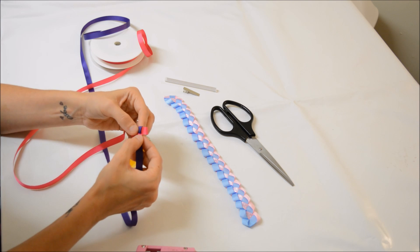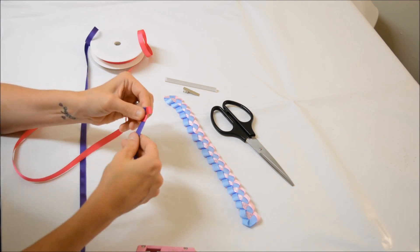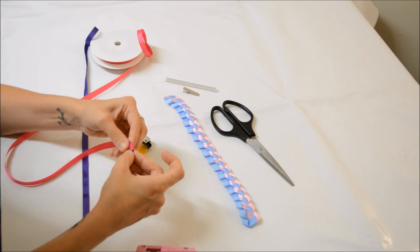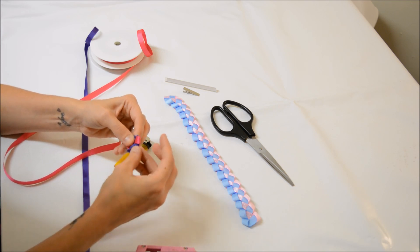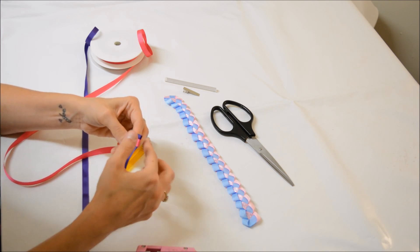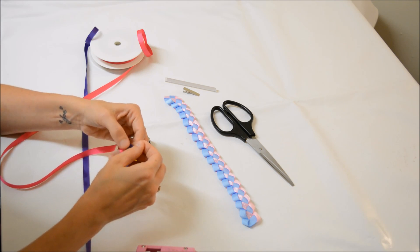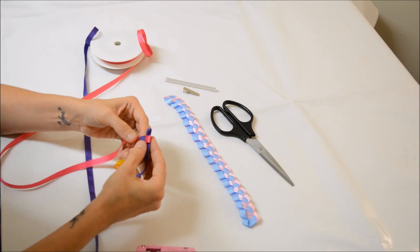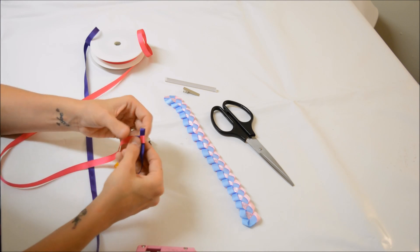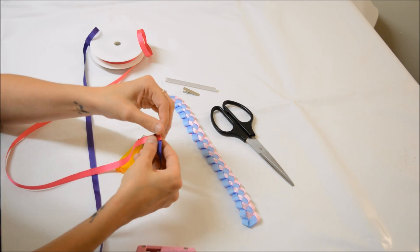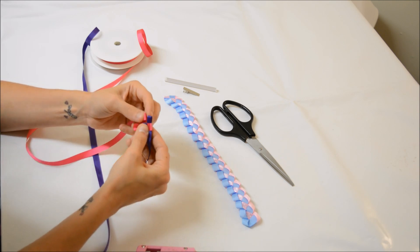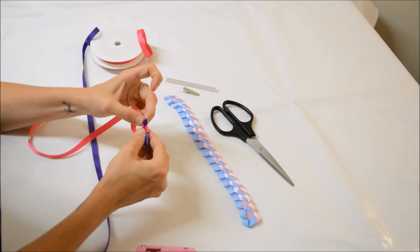So once you've done that, you want to take your purple ribbon, fold it, and push it through. Again, making sure that it's nice and tight. And then pull your pink ribbon to make sure that everything stays nice and tight. Push your pink ribbon through the purple.